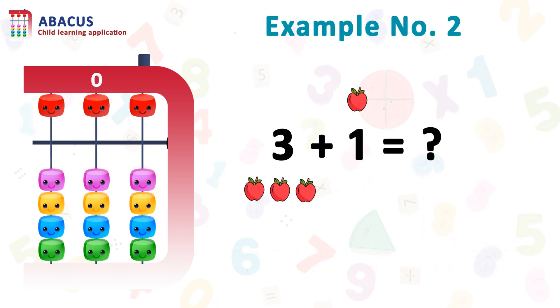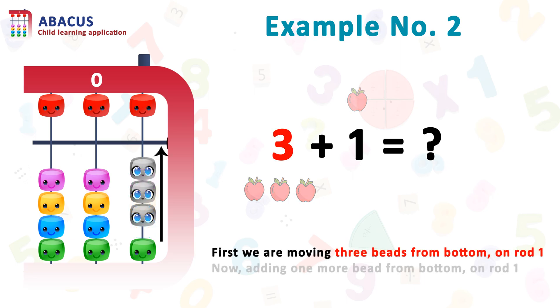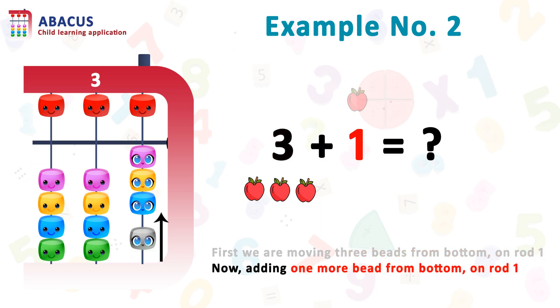Here we have example number two: three plus one. We have three apples and need to add one apple. So for three, first we are moving three beads from bottom to top on rod one. Now we have to add one more. For one, adding one more bead from bottom to top on rod one.